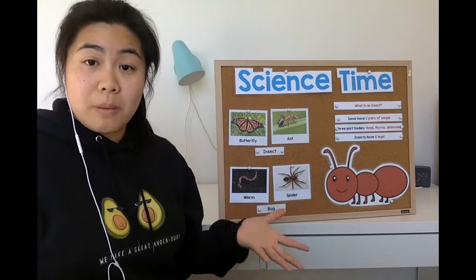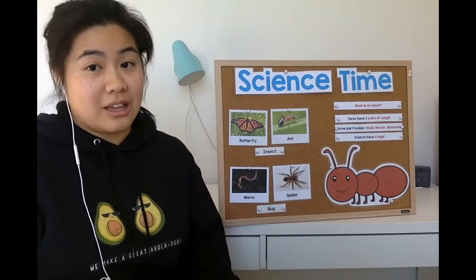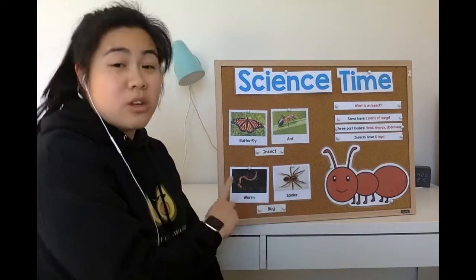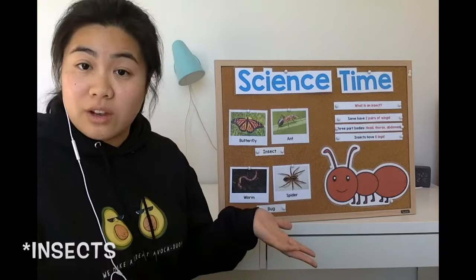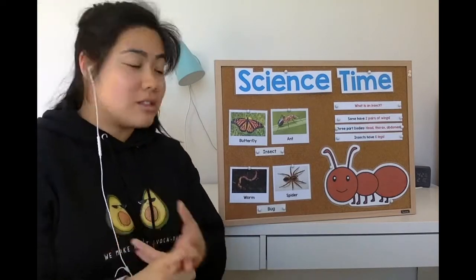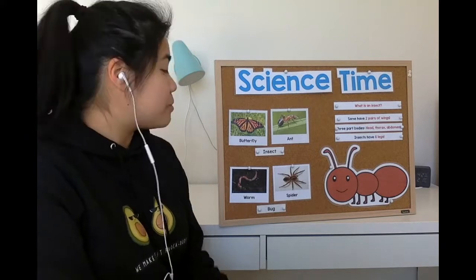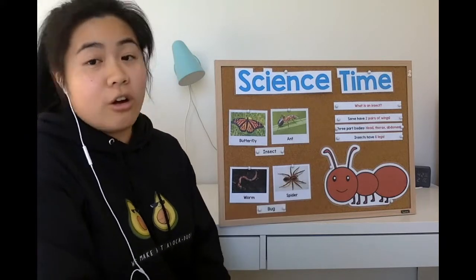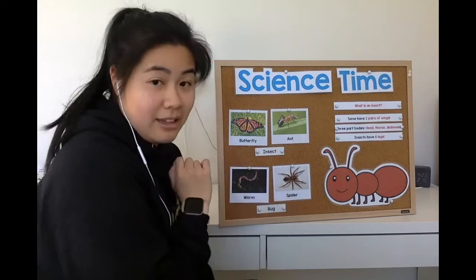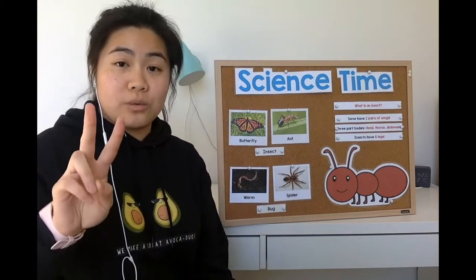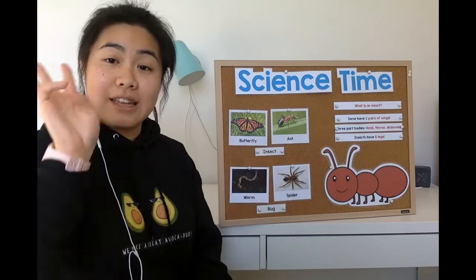Now there are some bugs that aren't actually insects. Those bugs might be worms or spiders. Worms are not bugs because they don't have any legs, they don't have any wings, and their bodies are just one long squiggly part. Spiders are also not insects because they have eight legs and their bodies come in two parts only, instead of three.